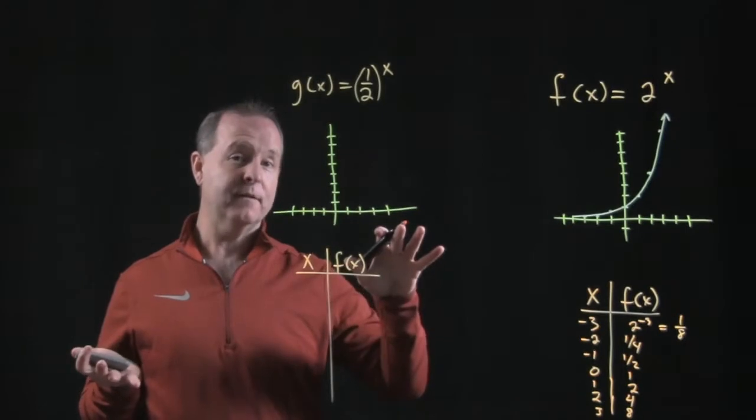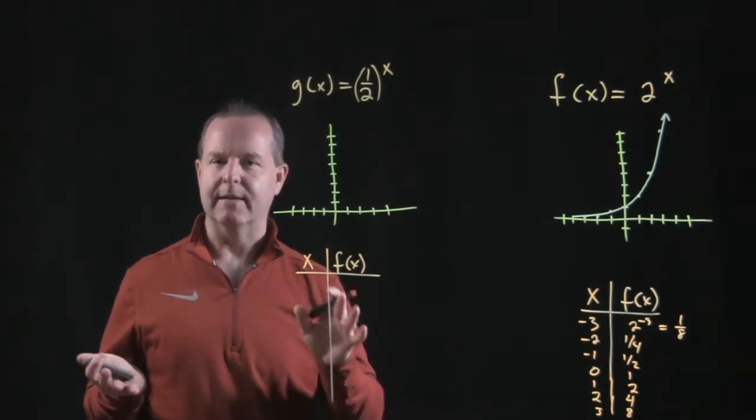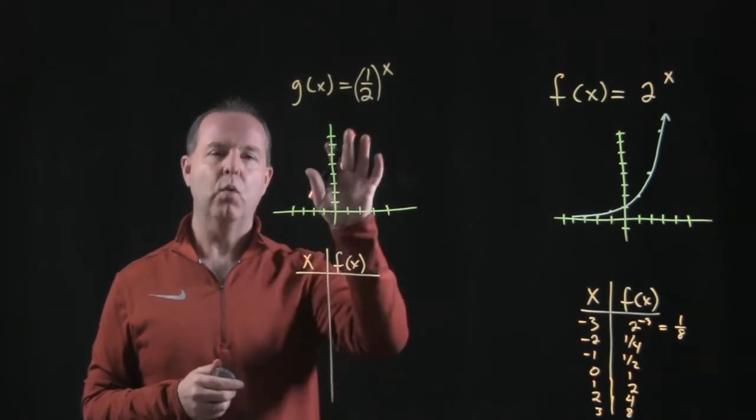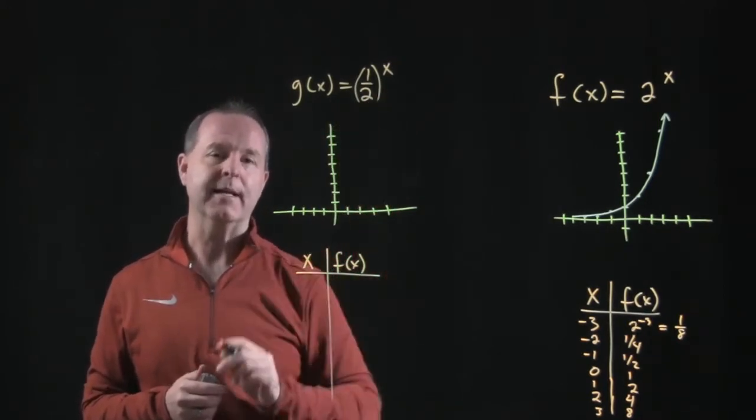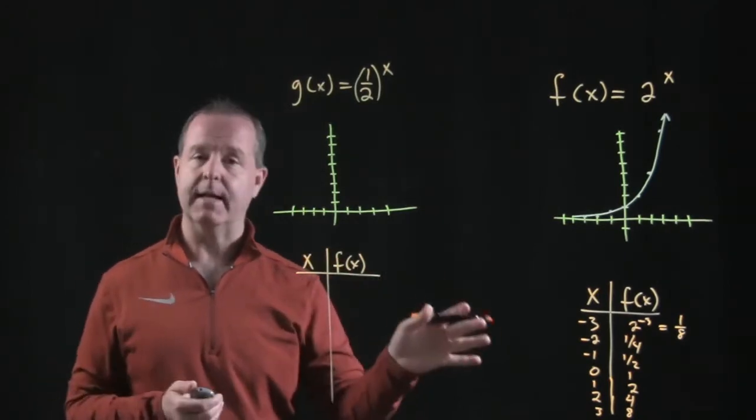So if an airplane has to take off, at some point in time it has to land. So what does a landing aircraft look like? What does an exponential function look like if its base is between 0 and 1? So let's graph some points just like we did before.